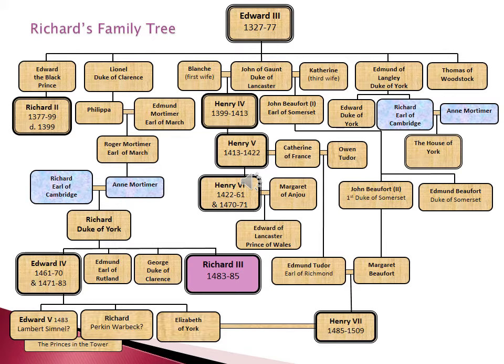Our story concentrates on the three middle sons: Lionel, Duke of Clarence; John of Gaunt, Duke of Lancaster; and Edmund of Langley, Duke of York. Lionel's daughter Philippa, over on the left hand side of your screen, married Edmund Mortimer, Earl of March. They had a son, Roger Mortimer, also Earl of March. And because King Richard II, shown with a heavy border indicating he was king, never had any children, it was the Earls of March who were his closest male heirs.